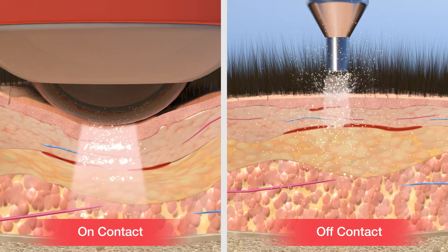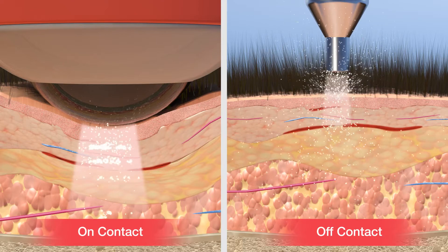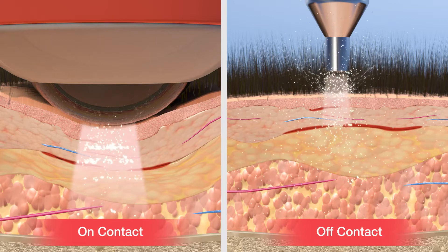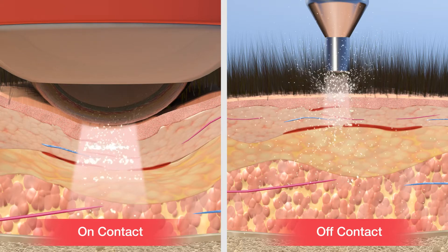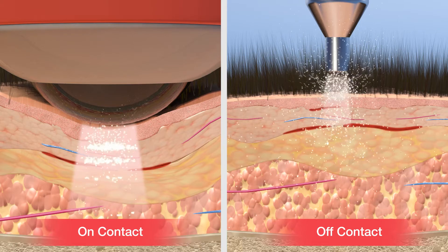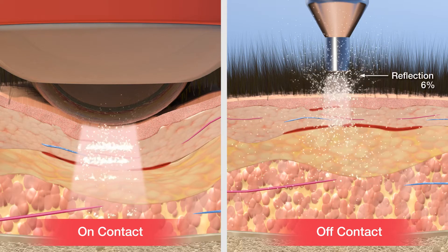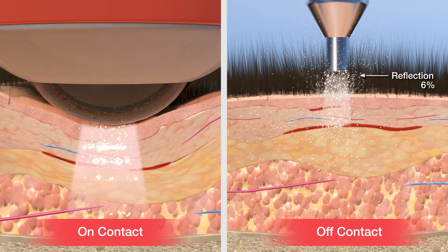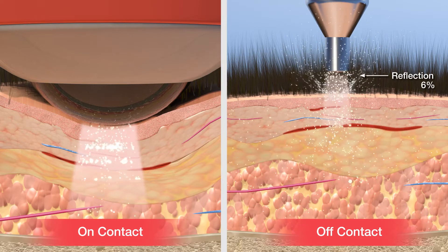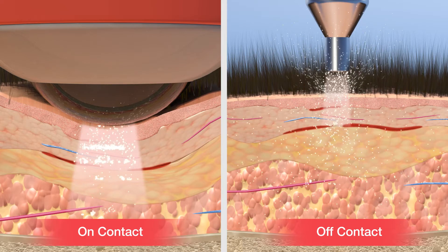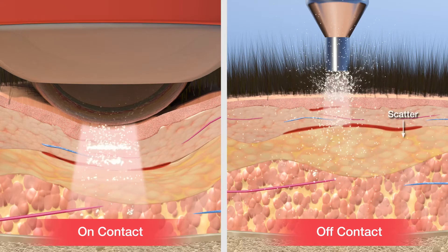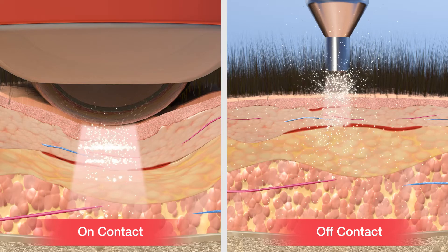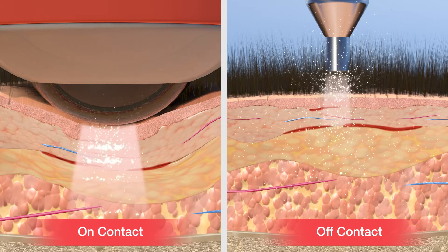The final factor in delivering an effective laser therapy treatment is the mechanism of delivery. For superficial conditions, off-contact treatment delivery is effective. One of the most significant obstacles to delivering photons to target tissue is reflection. When laser light enters the skin through off-contact delivery, up to 6 percent of energy can be lost due to reflection off the skin. In addition, some light energy is lost due to scatter or redirection of light from a straight path as it travels between different media. However, for deep tissue, on-contact delivery techniques prove more effective.